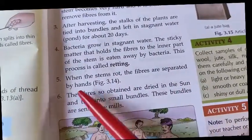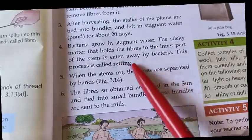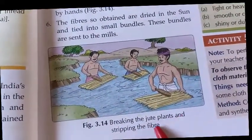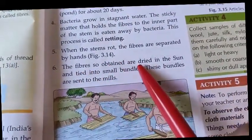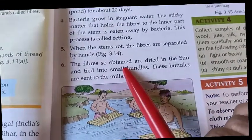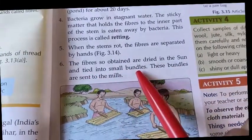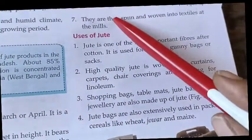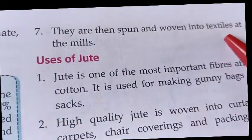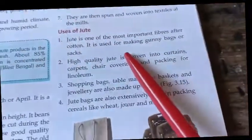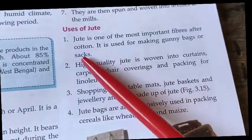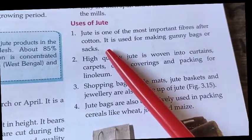After retting, when the bacteria have eaten the sticky matter, the fibers are easily separated by hand. As shown in the image, the fibers obtained are dried in the sun and tied into small bundles, which are sent to mills where they are spun and woven into textiles.